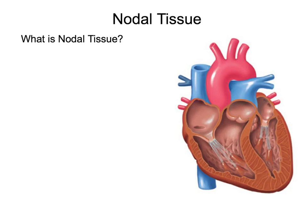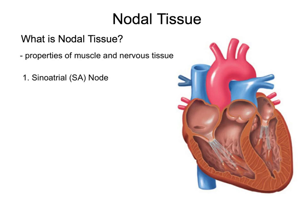Nodal tissue is unique because it has properties of both muscle and nervous tissue. The first type of nodal tissue is called the sinoatrial node, also known as the pacemaker cells. It's a cluster of cells located in the right atrium that has the ability to spontaneously generate an electrical impulse, which in essence sets the heart rate.